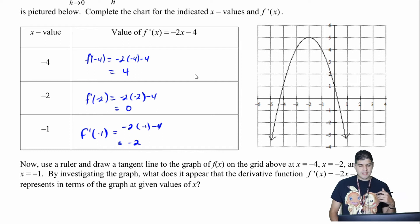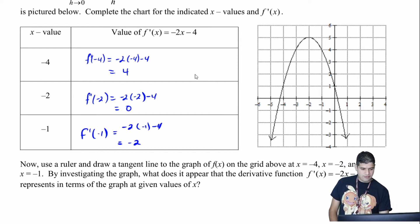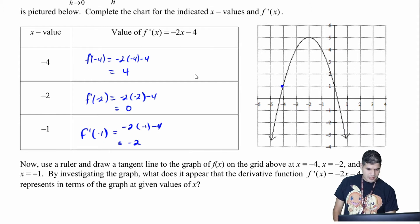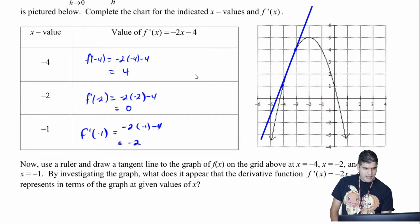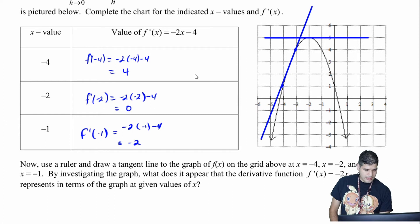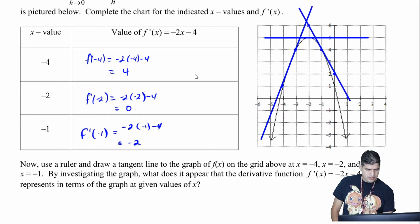So now what we want to do is draw in the values with the slope in our function here. At negative 4, I have a slope of positive 4, so up 4 over 1, up 4 over 1, connecting those points. In my second one, I had a slope of 0 at negative 2, so I draw a horizontal line. And then at negative 1, I have a slope of negative 2, so down 2 over 1 in both directions, connecting all of those points.